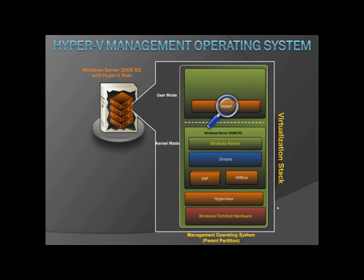We've also installed a Hyper-V component known as the Virtual Machine Worker Process or VMWP. It provides the virtual machine management services from the Windows Server 2008 R2 instance in the parent partition to the guest operating systems in the child partitions. It's responsible for the creation, configuration, and running of virtual machines, including pausing and resuming them. It saves and restores virtual machines, and it's even responsible for taking snapshots of a virtual machine — so it's a very important process indeed.